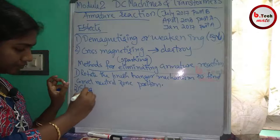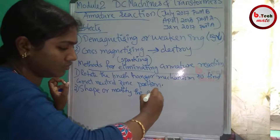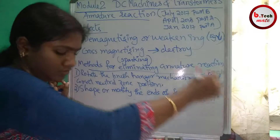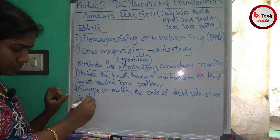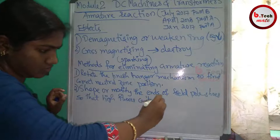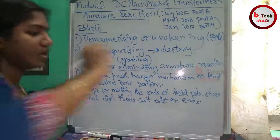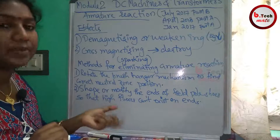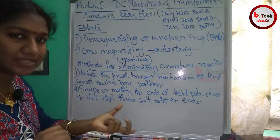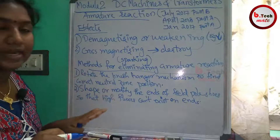The second method is to shape or modify the ends of the field pole shoes so that high flux concentrations cannot exist at the ends. By modifying the field pole shoes and adjusting their shape, we can reduce armature reaction.